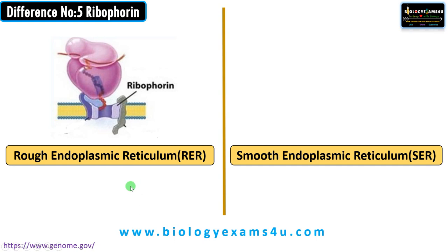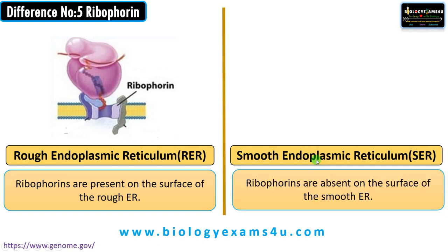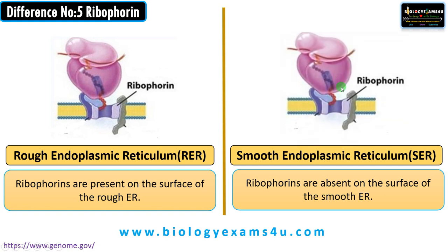Difference number five regarding the presence or absence of ribophorin proteins. Ribophorin protein is present on the surface of RER — it is a transmembrane protein that helps in the attachment of ribosomes to the surface. In the case of smooth endoplasmic reticulum, ribosomes are absent, therefore ribophorin protein is also absent on its surface.